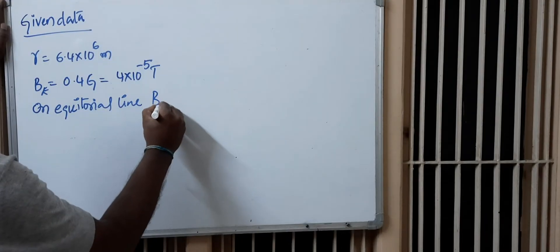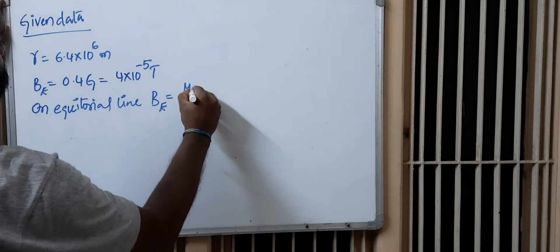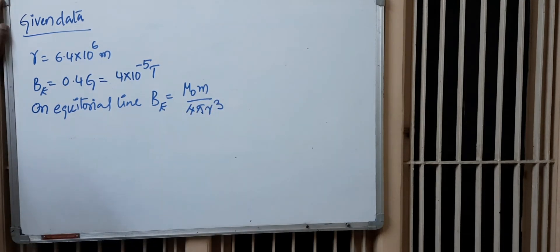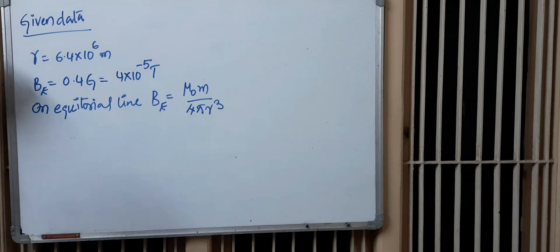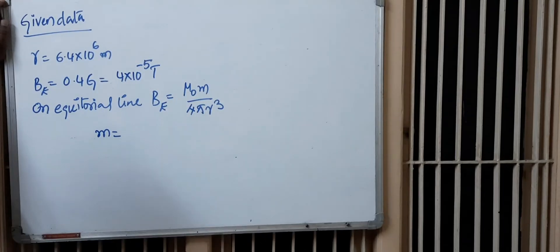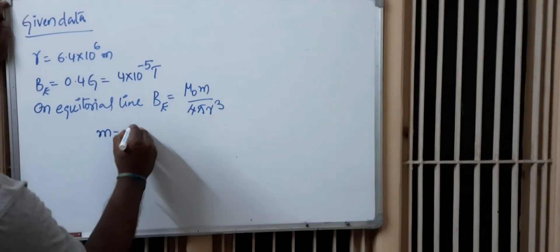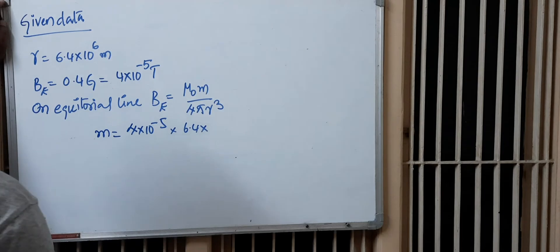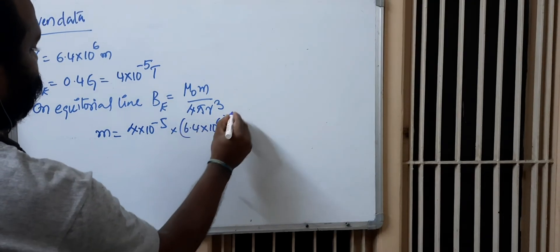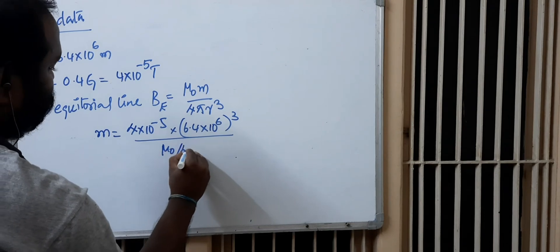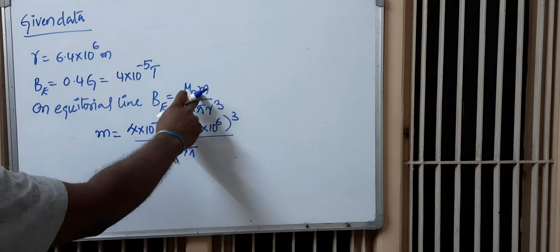On the equatorial line, the formula for B_e is: B_e = (μ₀ / 4π) × (m / r³). Here we have to calculate the magnetic dipole moment m. Substituting the values: m = (4 × 10⁻⁵) × (6.4 × 10⁶)³ divided by (μ₀ / 4π).